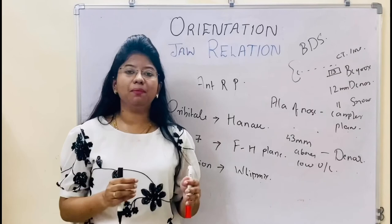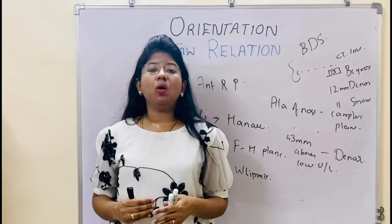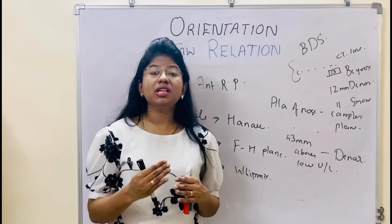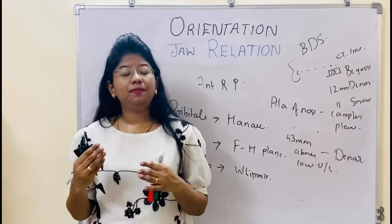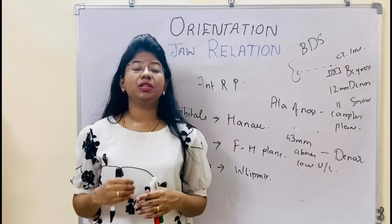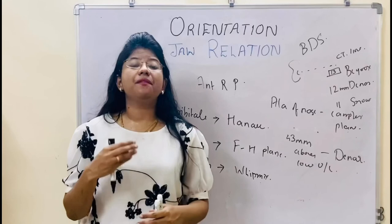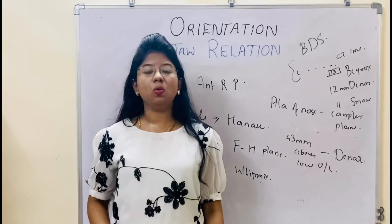So in this video, I have explained what orientation relation means, what is terminal hinge axis, what is rotation movement, what is a face bow, how we record the face bow, what are the different anterior and posterior reference points, and most importantly, the significance of recording orientation relation correctly and what will happen if you go wrong. If you have any doubts, feel free to ask. If you like my video, don't forget to press the bell icon and subscribe to my channel to get notified about other videos. Thank you so much.